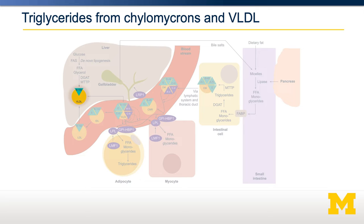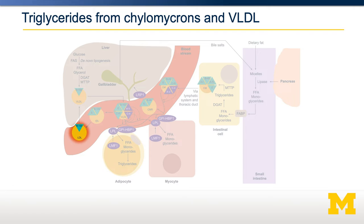VLDL, on the other hand, starts in the liver. Those particles are coded by ApoB100. VLDL particles, much like the chylomicrons, then transport triglycerides and cholesterol to peripheral tissues. Those peripheral tissues can then access the lipids, and when those lipids are accessed, the remnant of a VLDL is called an LDL — a low-density lipoprotein.